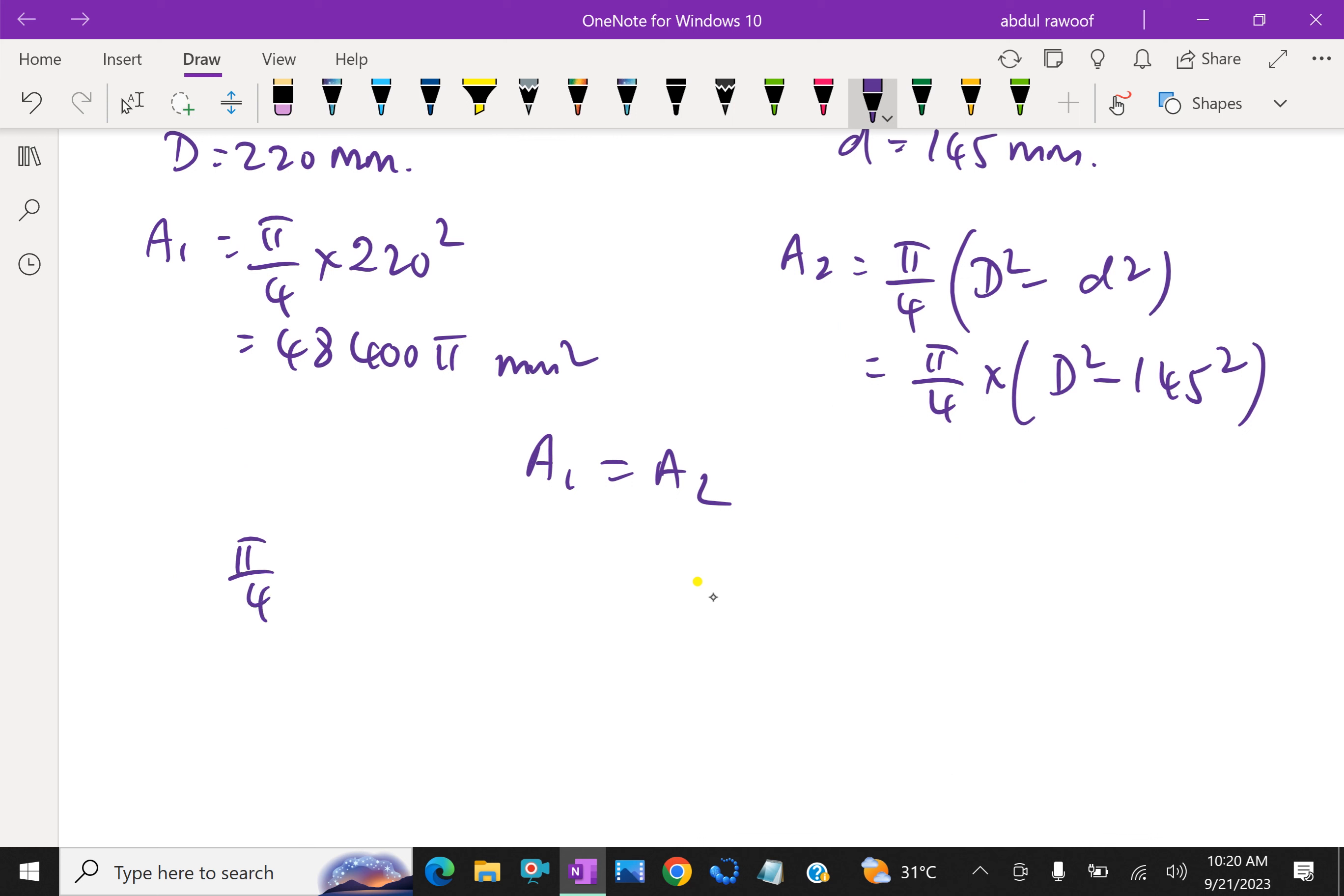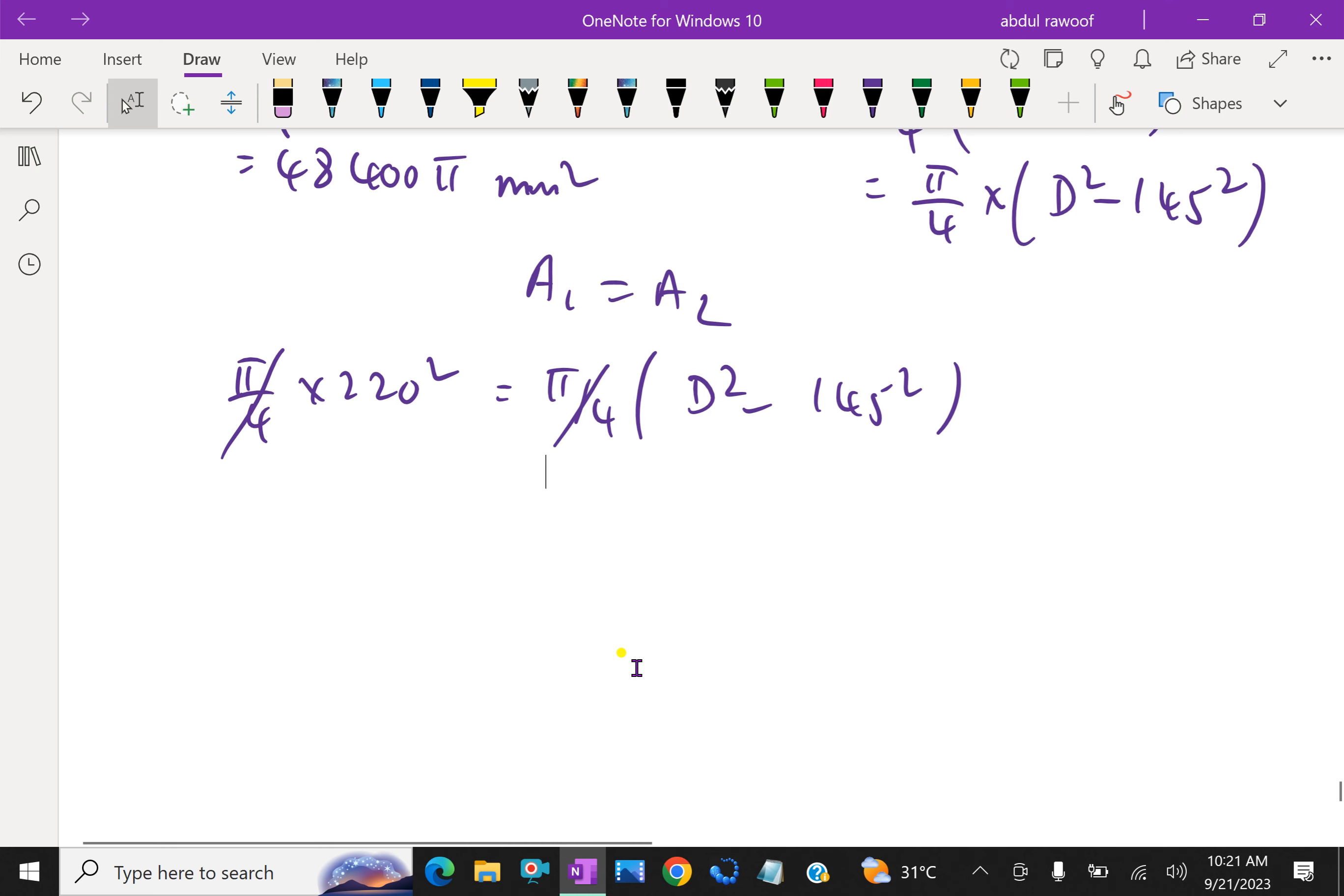That is π/4 × 220² equals π/4 (D² - 145²). So π/4 cancels out. D² equals 220² + 145². So this D² equals 69,425. Then square root gives D = 263.48 mm, or for simplicity D equals 263.5 mm.